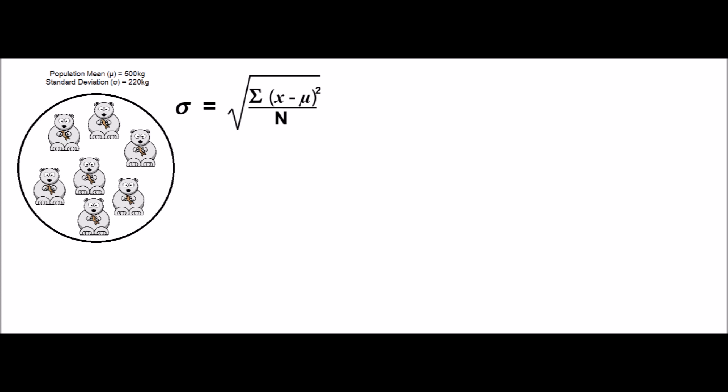However, we need to adjust this number for the size of the population or for the number of squared differences we are adding together, which is why we divide by n, or in this case, the total number of polar bears in the population. At this step, what we have calculated is called the variance. In order to get the standard deviation, we take the square root of the variance.